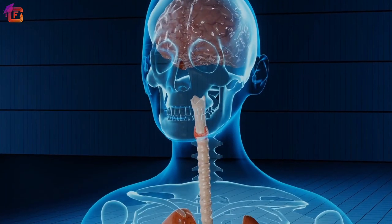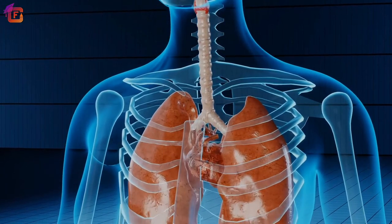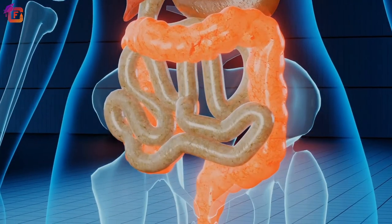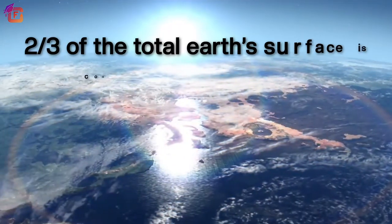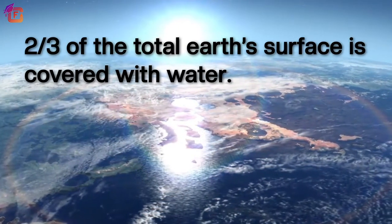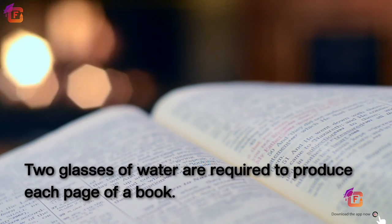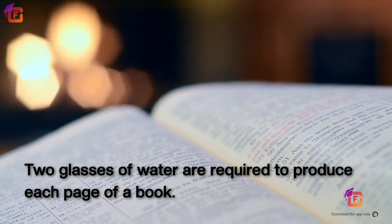In the human body, water transports oxygen and nutrients to all the cells and removes toxins and waste products. About two-thirds of the total earth's surface is covered with water. It is a tasteless, odorless, and transparent molecule composed of oxygen and hydrogen. About two glasses of water are required to produce each page of a book. It is important to maintain adequate water levels during digestion, breathing, and sweating.